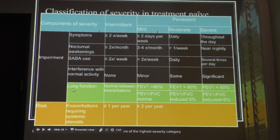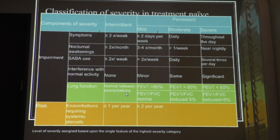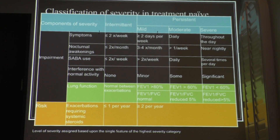Lung function — if you get a question about PFTs: patients with intermittent asthma have normal PFTs between exacerbations. Mild asthma has FEV1 greater than 80% — memorize this for boards. Moderate asthma has FEV1 greater than 60%. Severe asthma has FEV1 less than 60%.